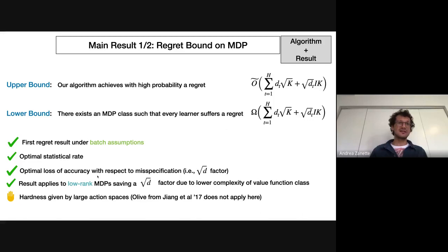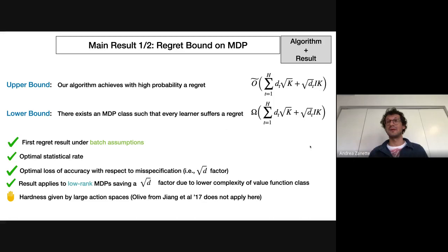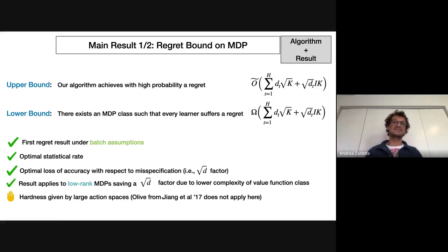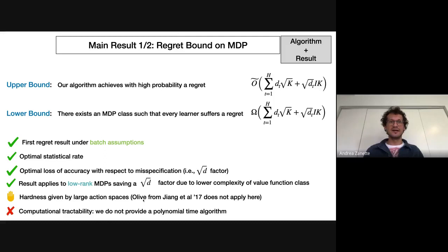There is some hardness given by large action spaces. The algorithm from the Bellman-rank work will not strictly apply here, even though the setting has low Bellman rank, because the way that algorithm is constructed it uses the assumption that the action space is small. There is also a lower bound that scales with the number of actions in terms of Bellman rank. So you need some extra assumption to achieve statistical tractability here. Unfortunately, computational tractability remains open and is left for future work.